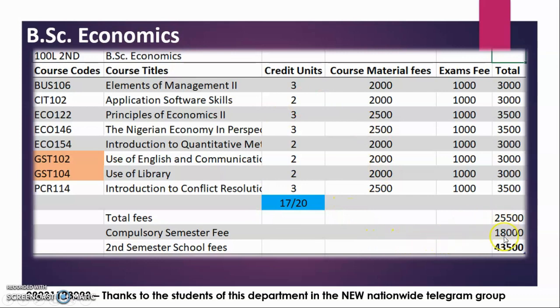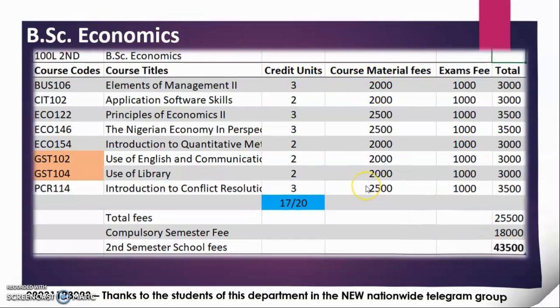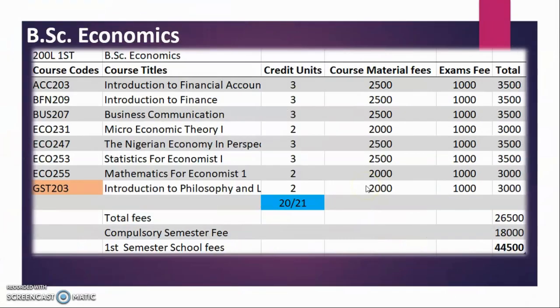Here is your fee: 43,500 — call it 44,000, because there is a similar error with the 3-unit courses. So call it 44,000.